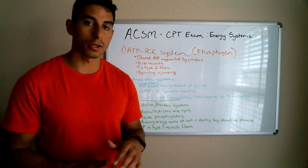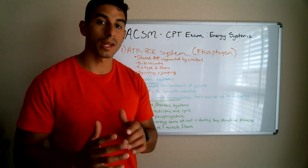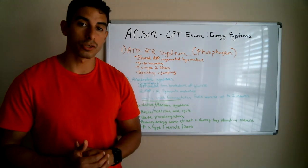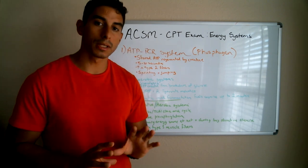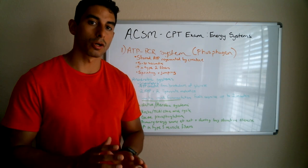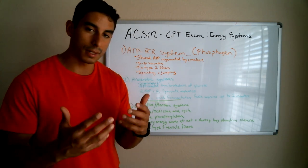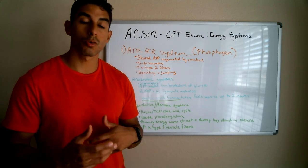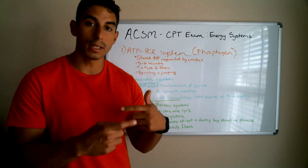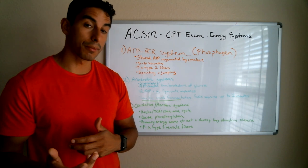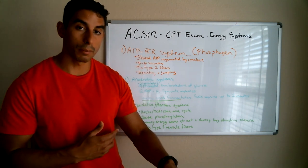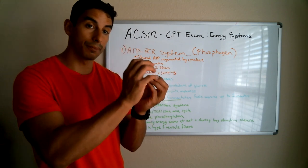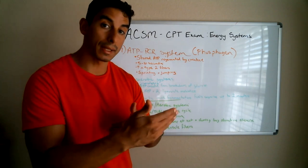The ATP-PCR system, also called the phosphagen system — you'll see those terms used interchangeably on the exam. ATP stands for adenosine triphosphate and is a basic form of energy. This system creates energy by turning ATP into ADP, and then phosphocreatine donates a phosphate to regenerate ADP back into ATP.